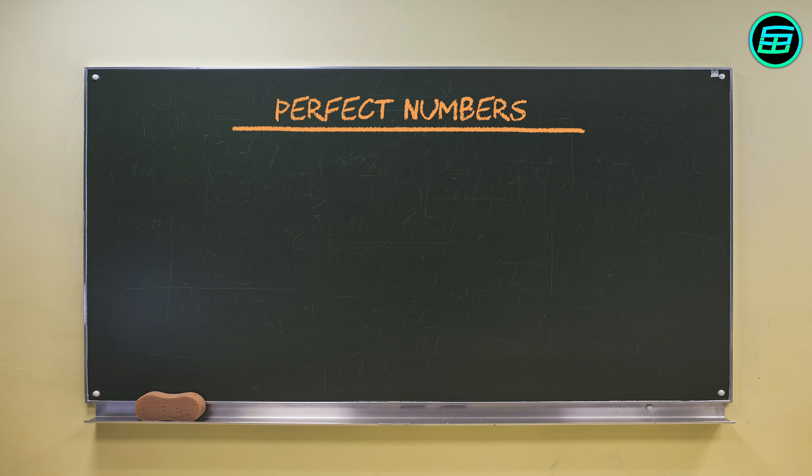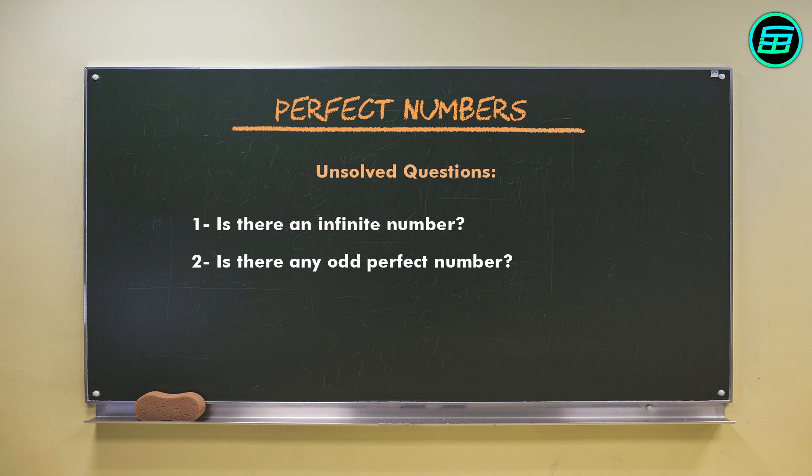There are some important unsolved problems to do with perfect numbers. For example, we don't know if there are infinitely many of them or if there are any odd perfect numbers. Most mathematicians believe there are infinitely many and that none are odd, but they haven't so far been able to prove either of these claims.